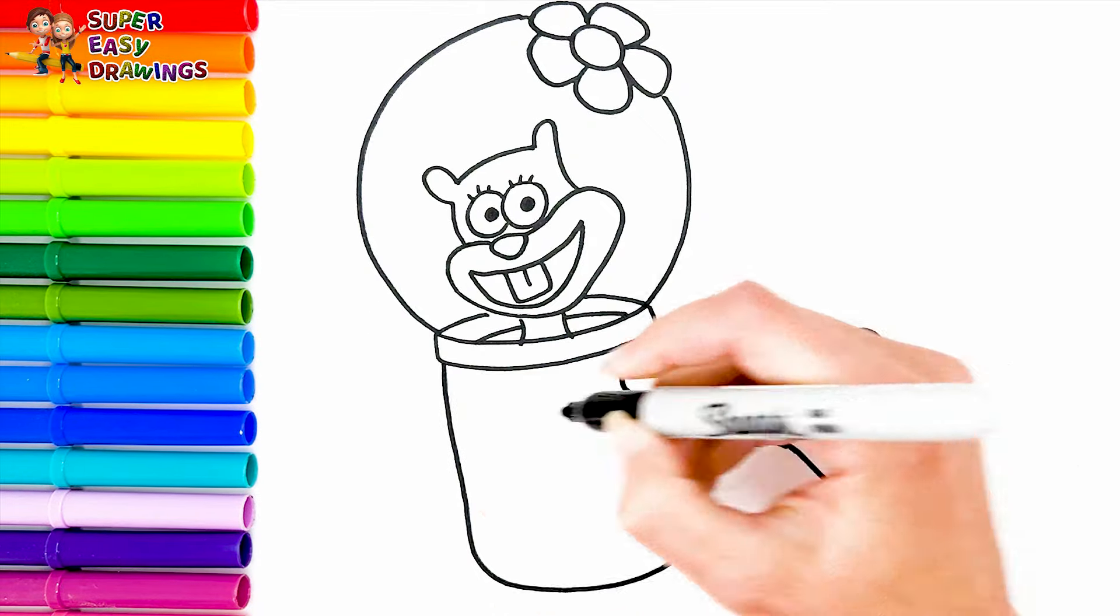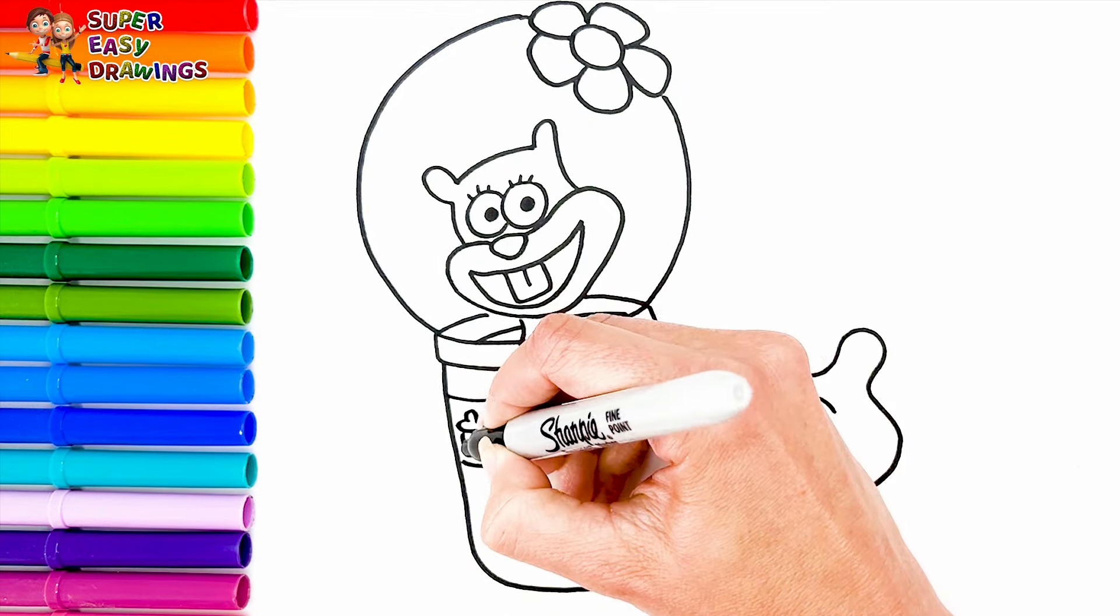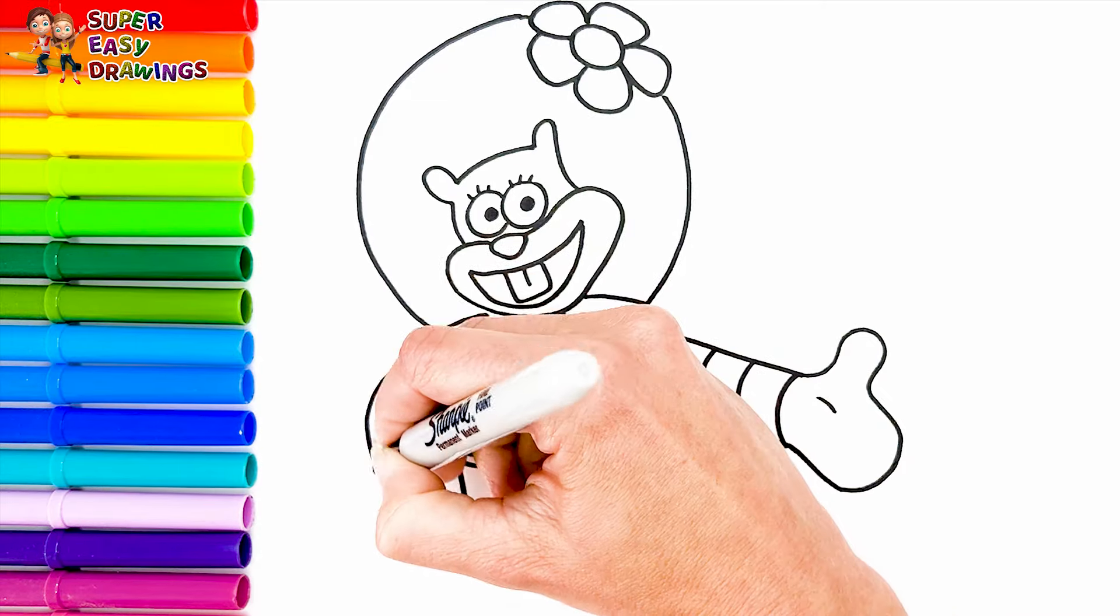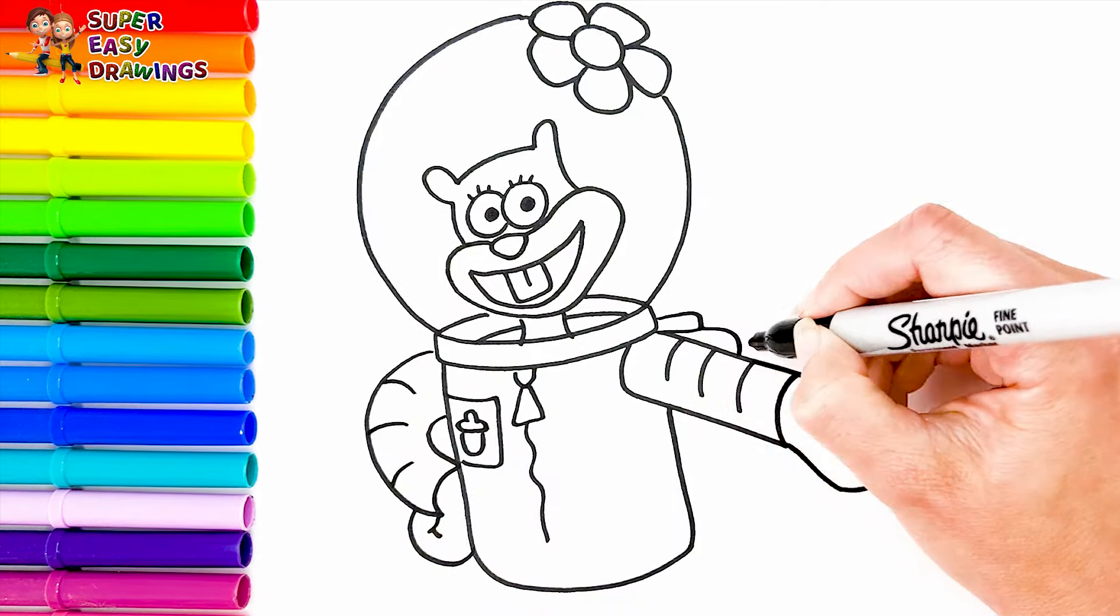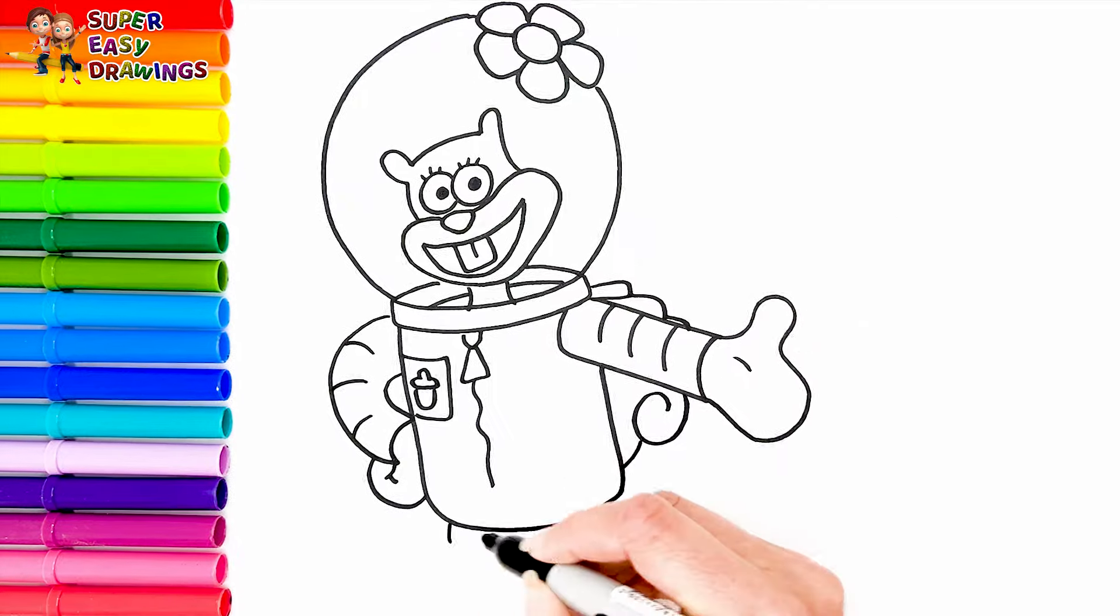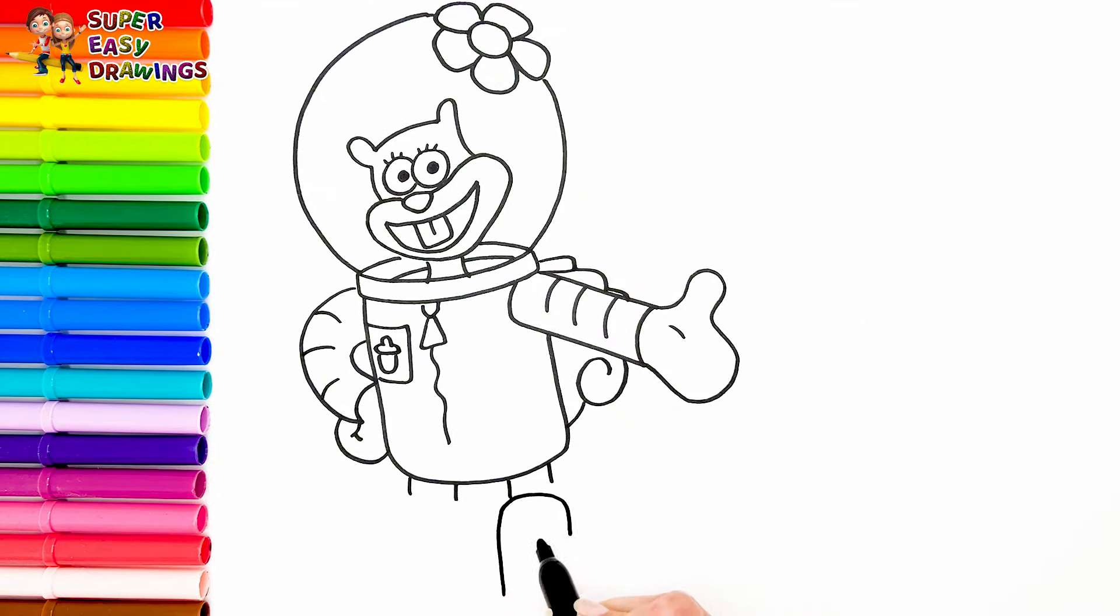I draw her body. Now let's decorate it like this. The next character is going to be Plankton and finally her two legs. Amazing!